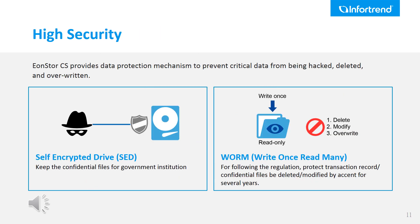When it comes to data security concern, EonStore CS provides data protection mechanisms to prevent critical data from being hacked, deleted, and overwritten, including supporting self-encrypting drives to keep confidential files for government institutions. Also, the Write Once Read Many (WORM) feature is supported as well — it follows regulations and protects transaction records and confidential files from being deleted or modified by accident for several years.